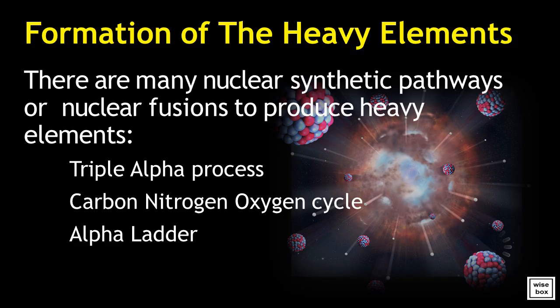Nuclear fusion pathways to produce heavy elements include the triple alpha process, carbon-nitrogen-oxygen cycle, and the alpha ladder.